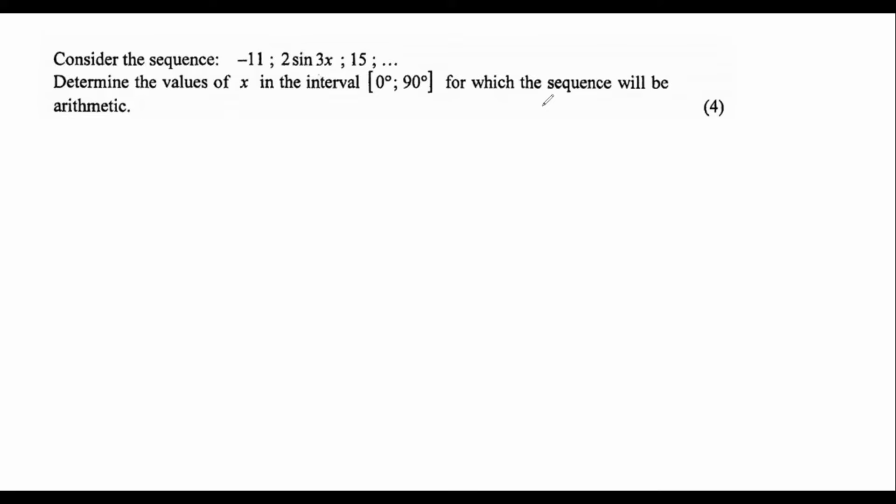It says here, consider the sequence and then they give us the first three numbers. Then it says determine the values of x for which the sequence is arithmetic. Now we know that when they ask a question like this, it normally looks like this: they'll do something like 2x minus 8, and then 3x plus 6, and then they'll say find the values of x if this sequence is arithmetic.